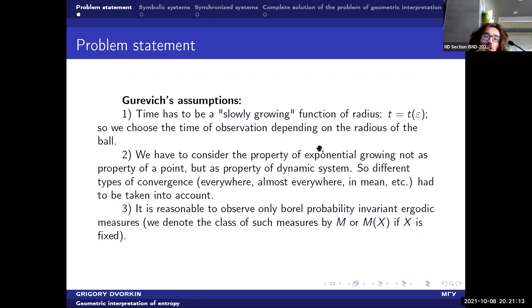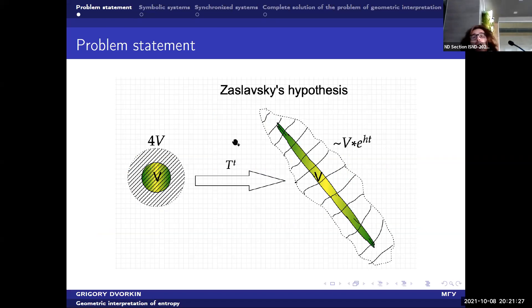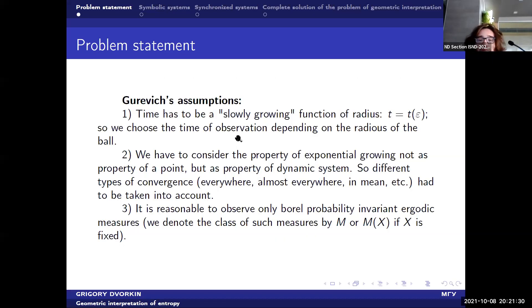This hypothesis turns out to be not true, without some natural assumptions, some natural additional assumptions. And my academic advisor, Gurevich, suggests such assumptions. Firstly, the time of observation, the time t, has to be slowly growing. And it should be a slowly growing function of radius. So the time should be a function of radius. And we choose the time of observation, depending on the radius.